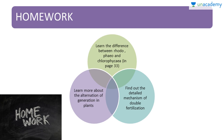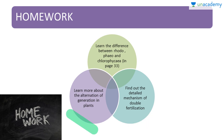The homework today is to learn the difference between Rhodophyceae, Phaeophyceae, and Chlorophyceae, as given on page 33 of the NCERT textbook. Also, find out the detailed mechanism of double fertilization in angiosperms, and learn more about the alternation of generation in plants.